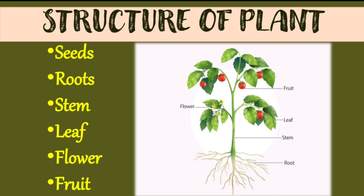What is the structure of plants? The structure of a plant includes seeds, roots, leaf, stem, flowers, and fruits. These are all the parts of the plant.